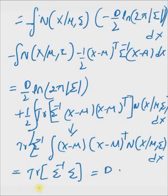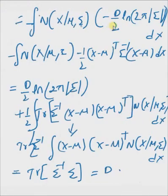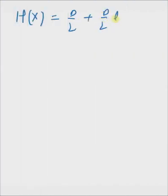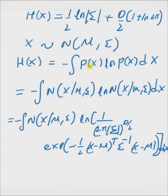Hence, the entropy is given by d by 2 plus another d by 2 multiplied by the logarithm of 2 pi times the determinant, which is basically our final result. If you look here, it is the same as the result we stated at the beginning.